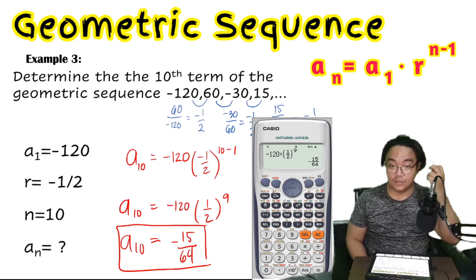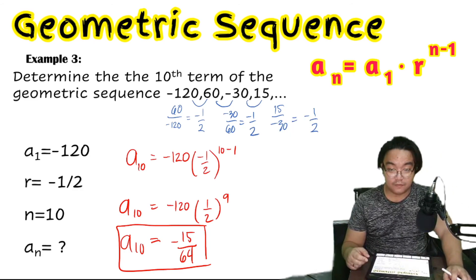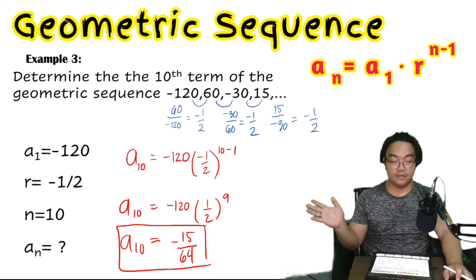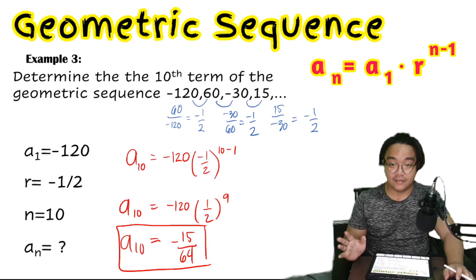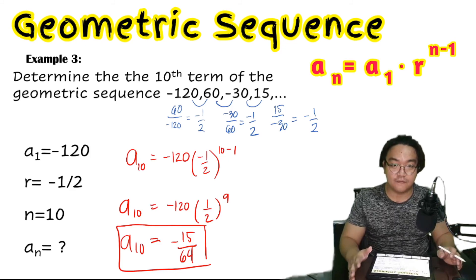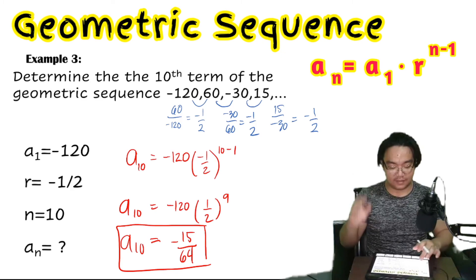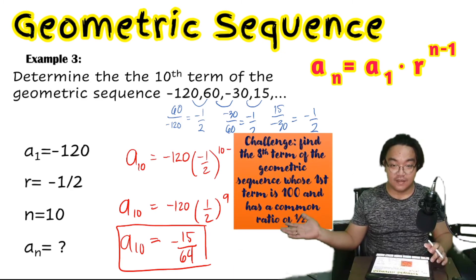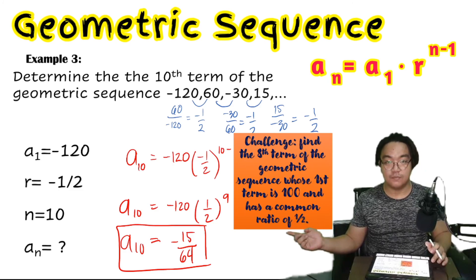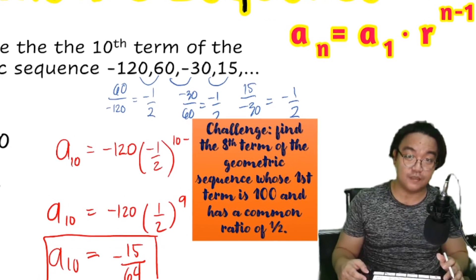As always, I'm leaving a challenge question: find the 8th term of the geometric sequence whose first term is 100 and has a common ratio of 1/2. Put your answers in the comments below. I hope you learned something from today's video — see you in the next one!